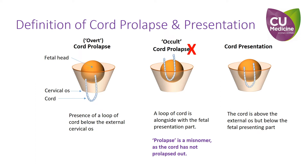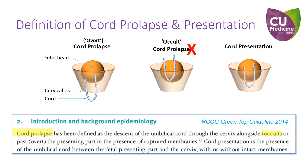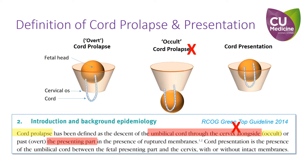However, the term prolapse is a misnomer, as the cord has not prolapsed out — both the cord and the fetal presenting part are still above the external os. The RCOG guideline describes occult cord prolapse as the descent of the cord through the cervix alongside the fetal presenting part. This is an improper description because it is rather impossible for the cord to pass through the cervix while still being alongside the presenting part, which has not yet passed through until the second stage of labor. And if it does happen, it is not occult anymore.